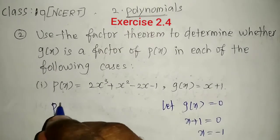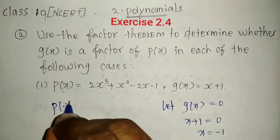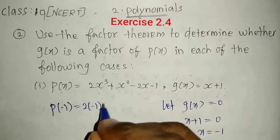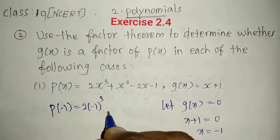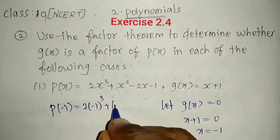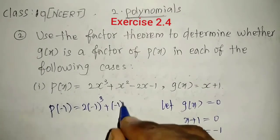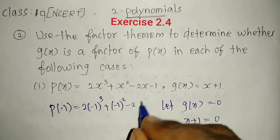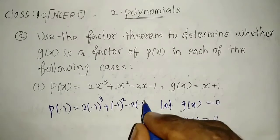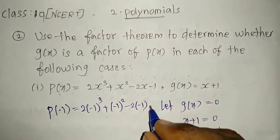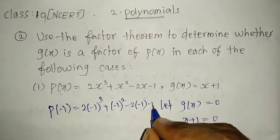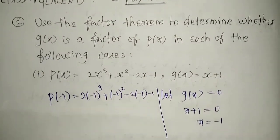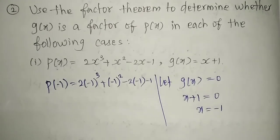So we get p of minus 1 equals 2 into minus 1 whole power 3, plus minus 1 squared, minus 2 into minus 1, and the constant minus 1. We have to check this. Now we will start to simplify.